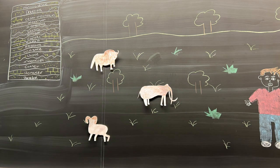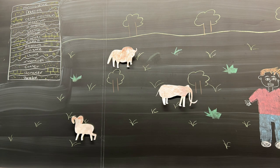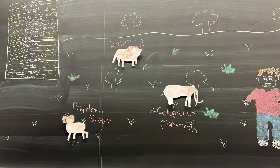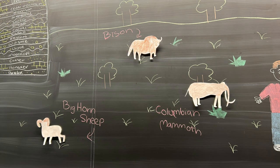After a large unconformity, we're now jumping forward to the time of the Pleistocene deposits, where we find mammal fossils like bighorn sheep, bison, and Columbian mammoths.